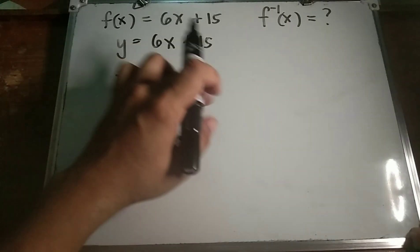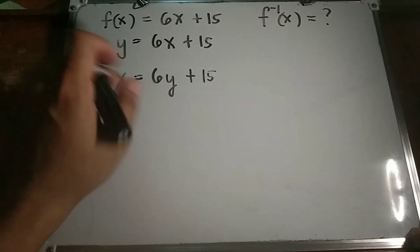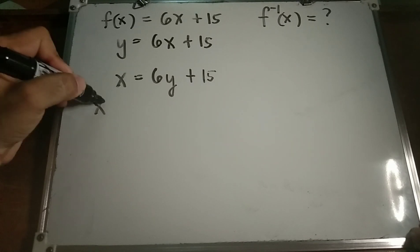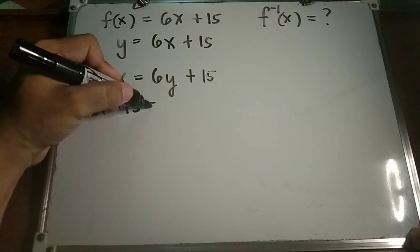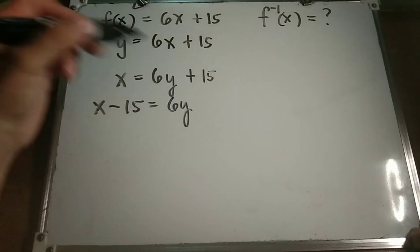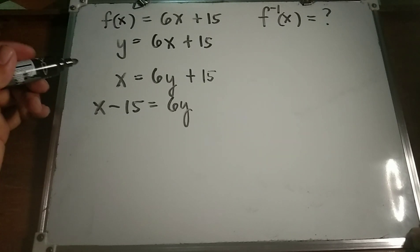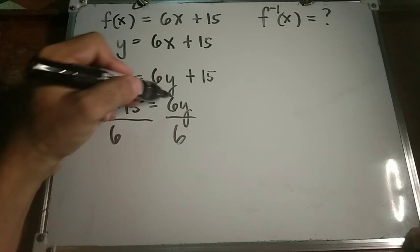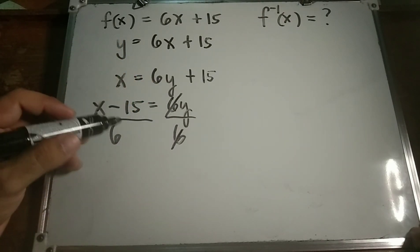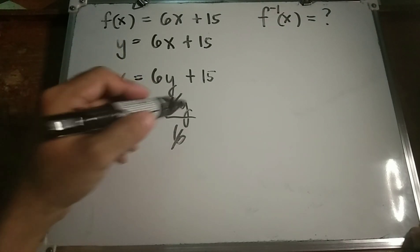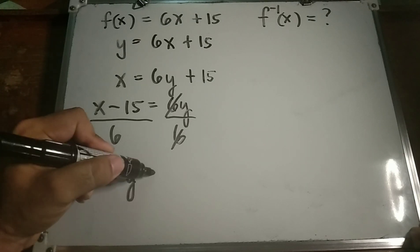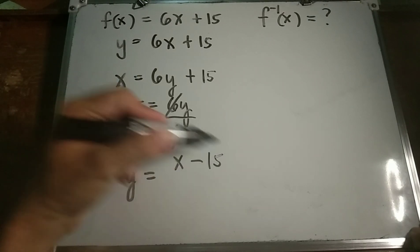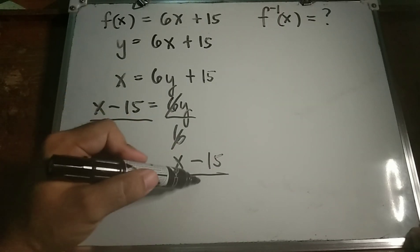We move positive 15 to the left side, so it becomes x minus 15 equals 6y, and then divide both sides by 6. So we get y equals x minus 15 over 6.